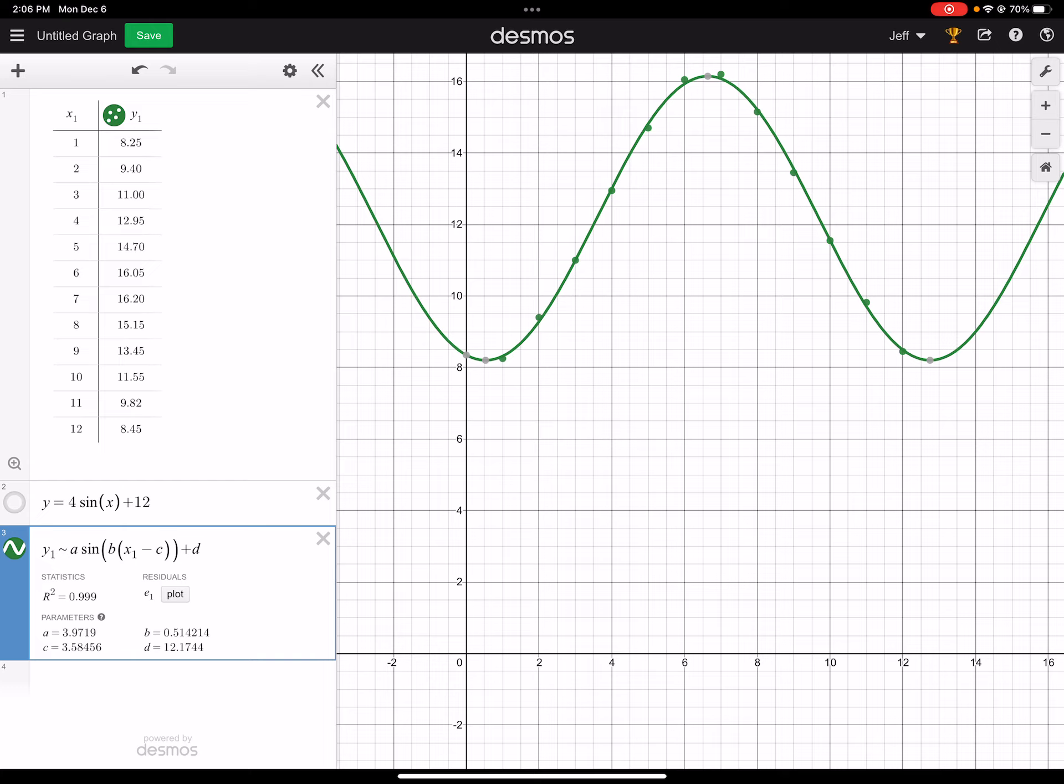And so I can look down here, and it tells me what the a value is, 3.97. That's close to 4. The b value, from that I can get the period, 2 pi divided by b, of course, is the period.